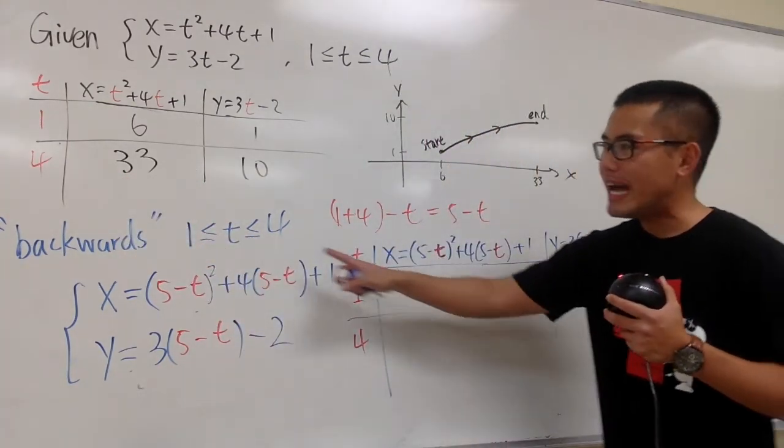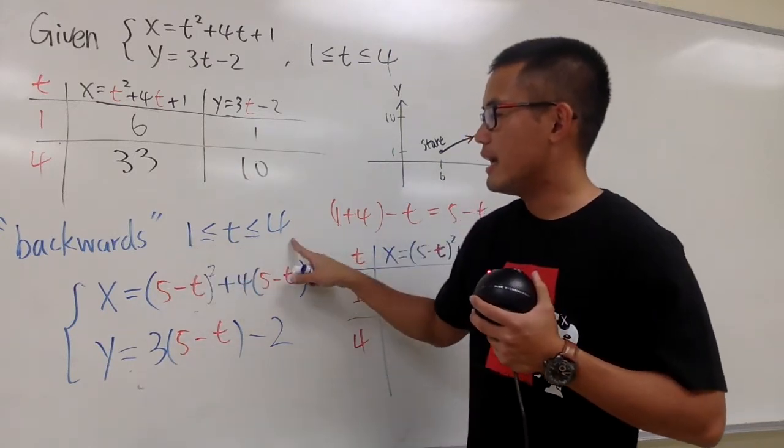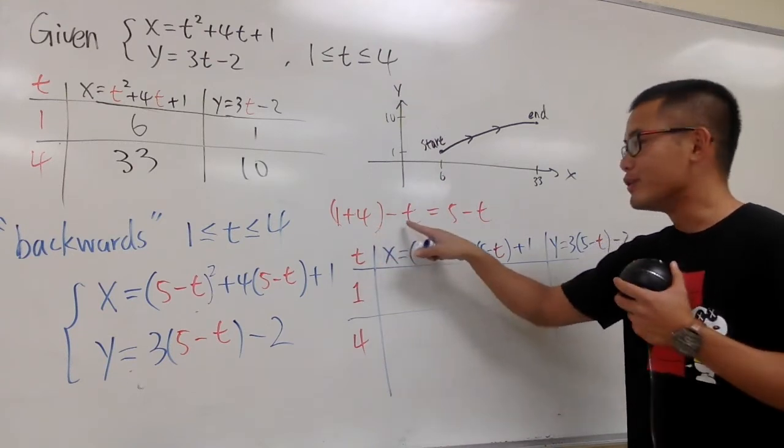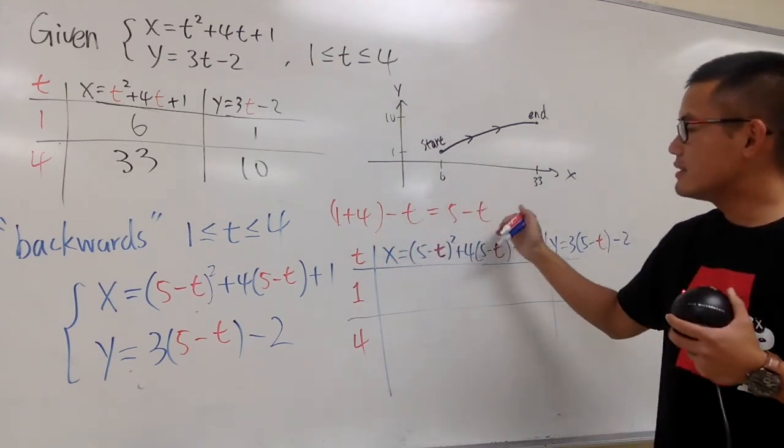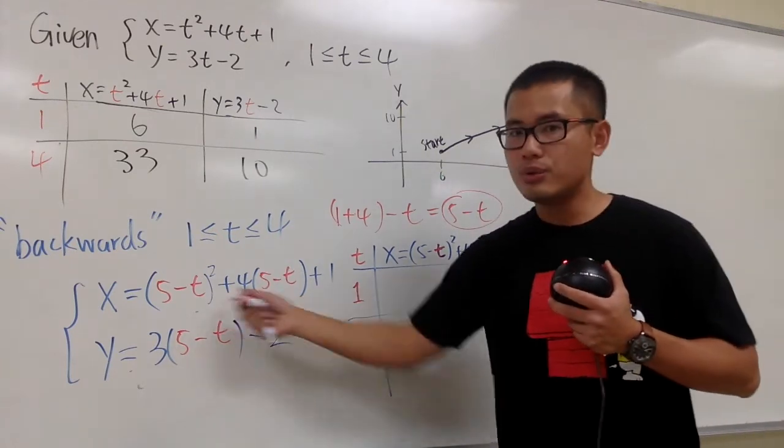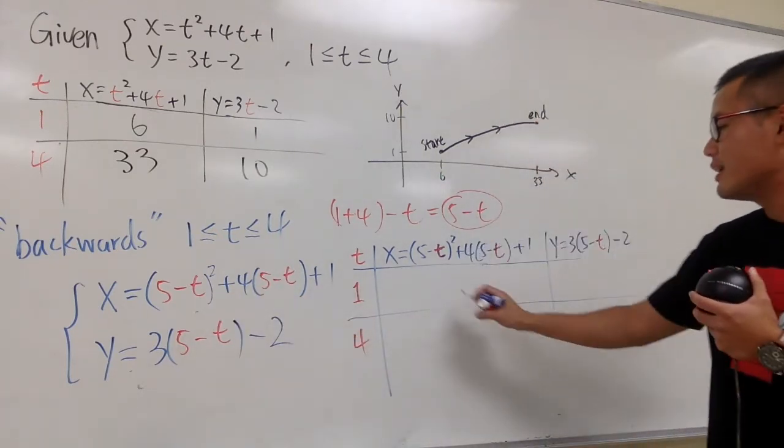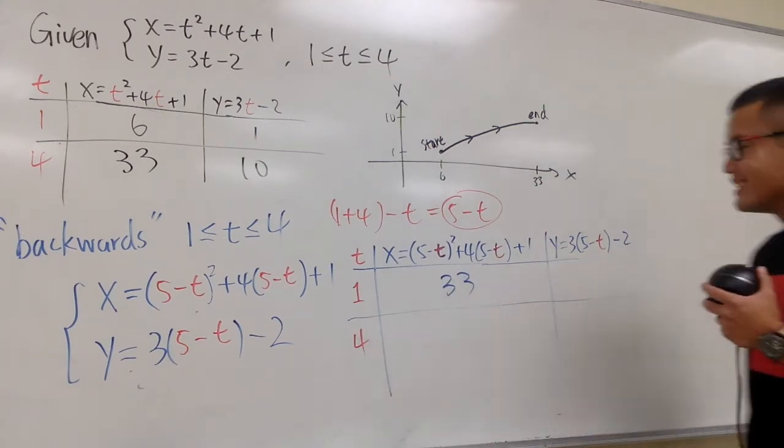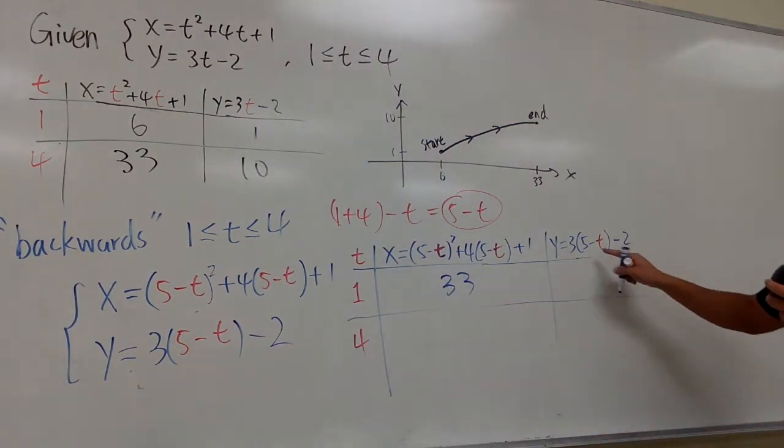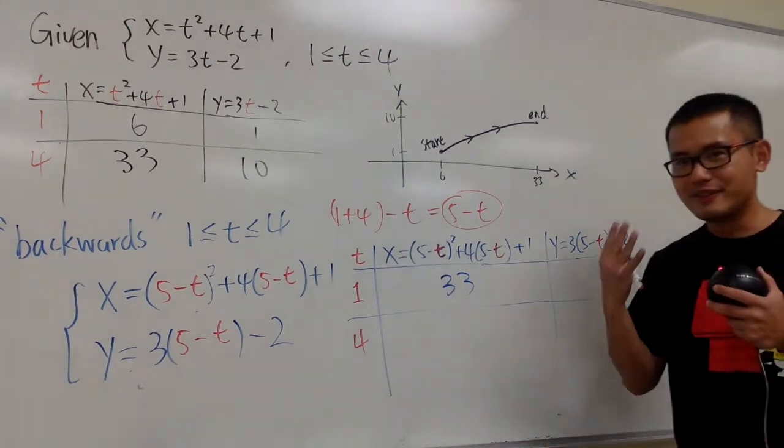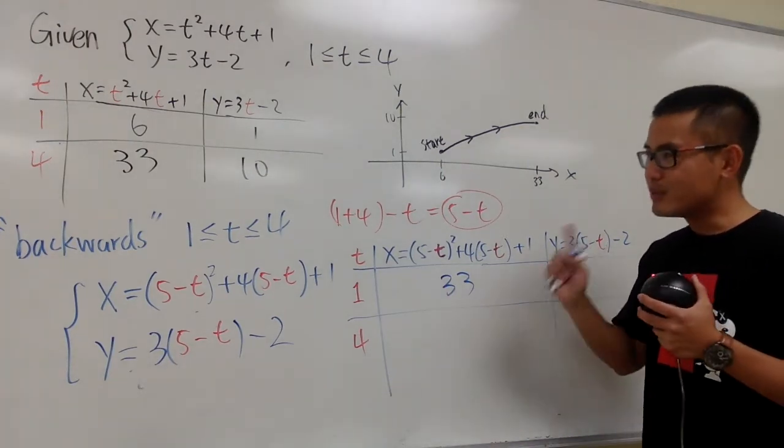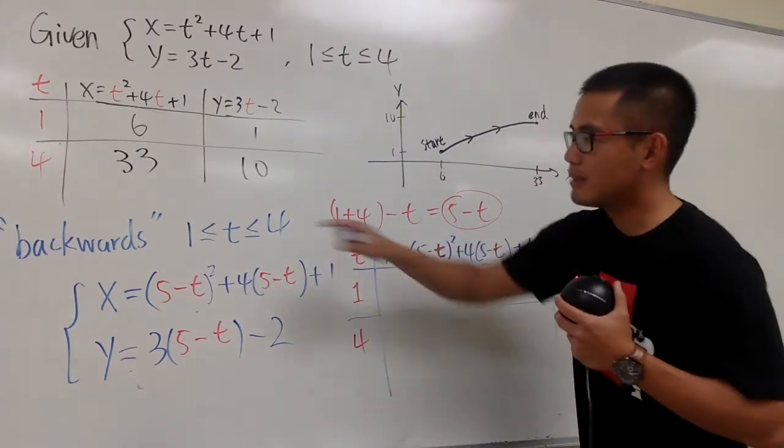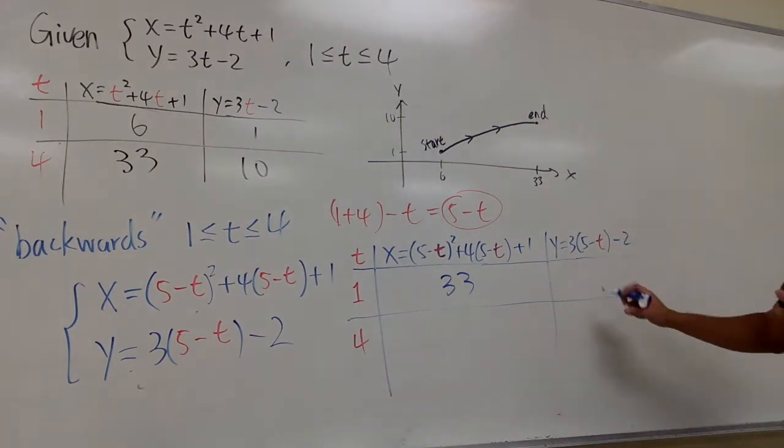So that's why you add the starting and the end for the time, so you did, that's why we did 1 plus 4, and then you subtract the t. This is the new variable that you had to plug into the original. Anyway, when you work this out, you end up with 33. Likewise, when you plug in 1 into this, you will see 5 minus 1 is 4. Once again, that's the reason why you add this and that together, so that when you plug in 1 you get back to the other number. And then just work this out, you get 10.